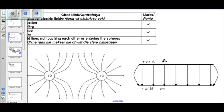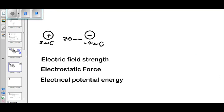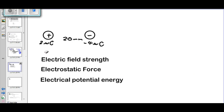Going further today, we will be discussing Coulomb's Law with examples relating to calculations. They can ask us to calculate the electric field strength, the electrostatic force, or the electrical potential energy. We have a diagram with a positive sphere and a negative sphere 20 millimeters apart. The positive sphere has a charge of 2 microcoulombs and the negative sphere has a charge of minus 4 microcoulombs. We're going to look at all three scenarios relating to this diagram.